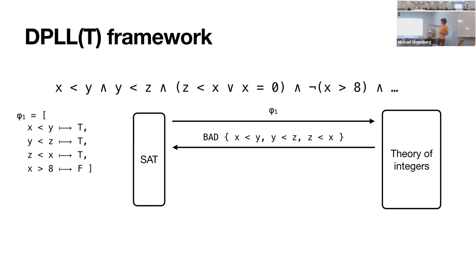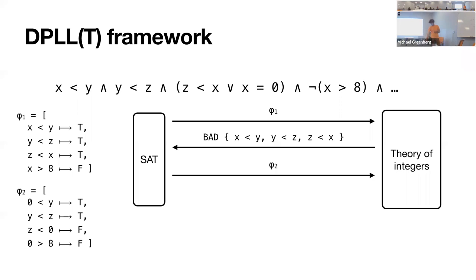The theory solver returns a conflict justification — if we made it no longer the case that z is less than x, then that would be a satisfiable formula. The SAT solver takes the conflict justification, adds it as a new constraint, learns it, and then comes up with another partial assignment. It's important to note that not all SMT theories are equal in how effectively they can communicate with a SAT solver. Key questions are: how quickly can you identify a conflict, can you proactively find a conflict on a partial assignment, and how precise are the justifications you give?